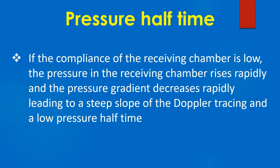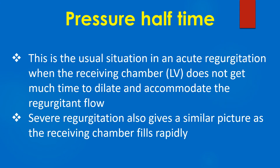If the compliance of the receiving chamber is low, the pressure in the receiving chamber rises rapidly and the pressure gradient decreases rapidly, leading to a steep slope of the Doppler tracing and a low pressure half time. This is the usual situation in acute aortic regurgitation, when the receiving chamber or left ventricle does not get much time to dilate and accommodate the regurgitant flow. Severe regurgitation also gives rise to a similar picture as the receiving chamber fills rapidly.